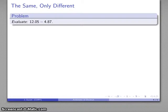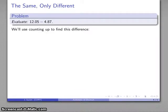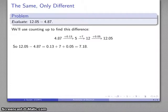So what can I do with this? I might use counting up to find the difference, and so here this difference is going to be, I'm going to start at 4.87 and go up to 12.05 and see how far I have to go. If I go up by 13 hundredths, I get to 5. If I go up by 7, I get to 12. And if I go up by an additional 5 hundredths, I get to 12.05. And so altogether, I've had to go up 0.13 plus 7, plus 0.05, 7.18.